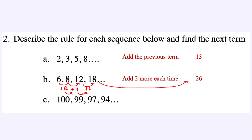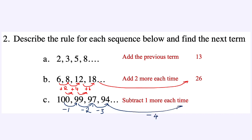For Q2C, we have 100, 99, 97, 94. From 100 to 99 we subtract 1, from 99 to 97 we subtract 2, from 97 to 94 we subtract 3 — we subtract 1 more each time. So the next subtraction would be 4, which means the next term must be 90. Those last three questions get your brain going — we've covered finding the next term and describing the rule used.